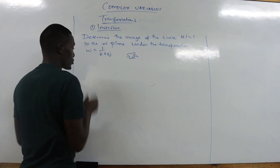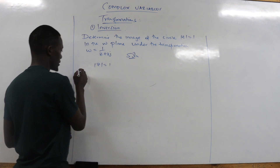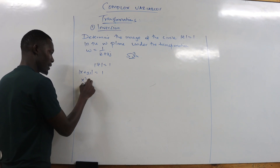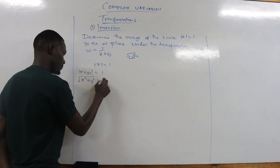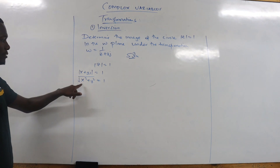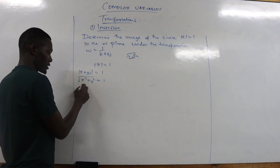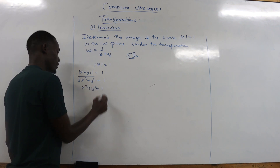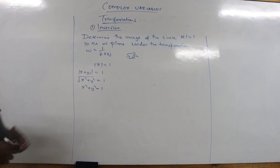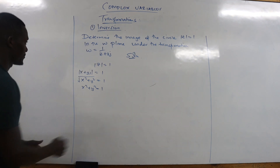We start by finding the equation of the circle. We have z equals 1, which is given by x plus yj equals 1. Squaring x and y, we get x squared plus y squared, and the square root — remember this is the magnitude or absolute value. Square both sides to remove the square root, so x squared plus y squared equals 1 squared, which is 1. Therefore the equation of the circle is x squared plus y squared equals 1.